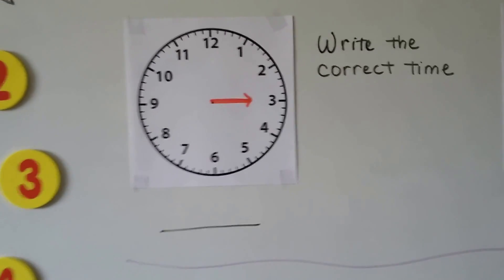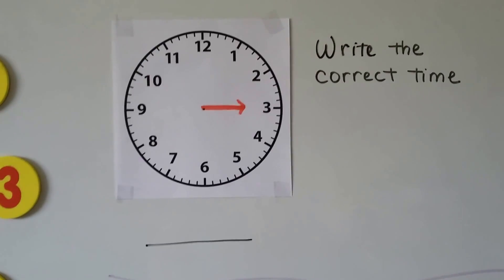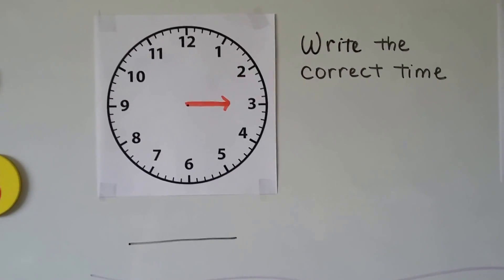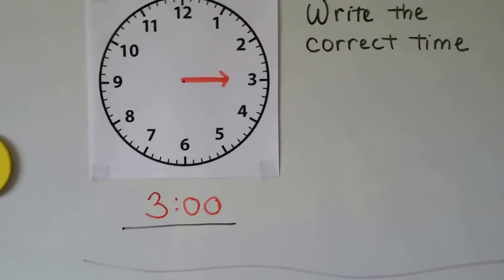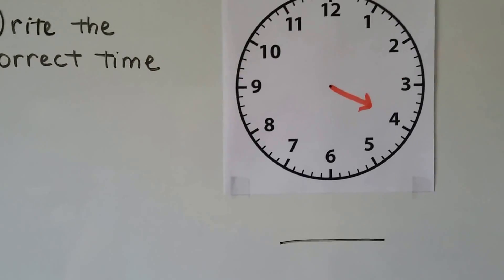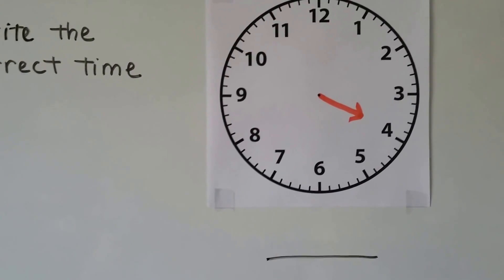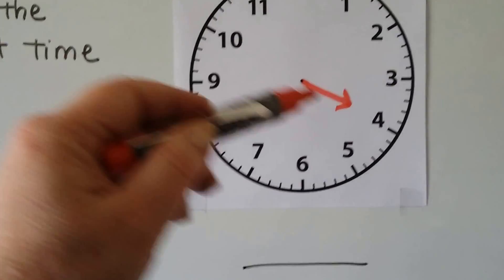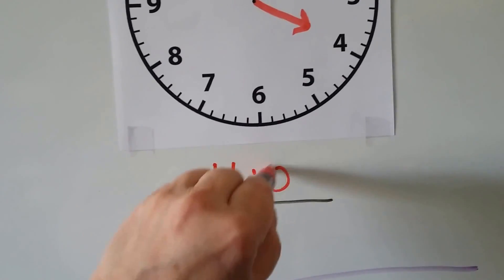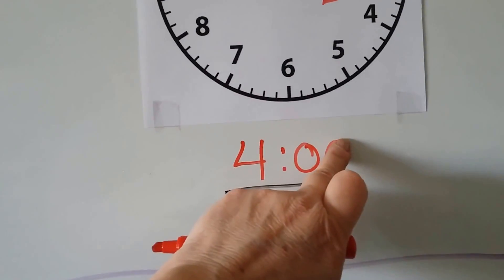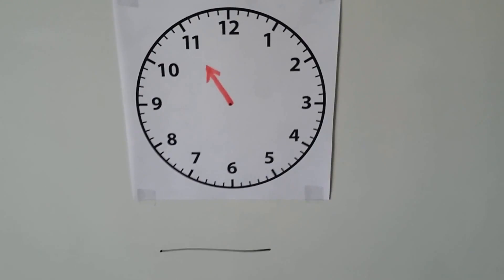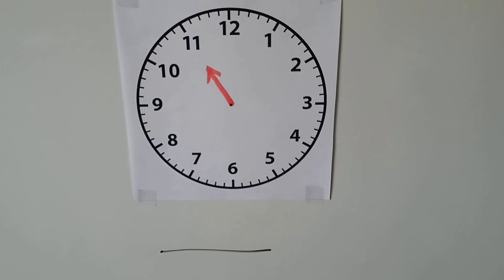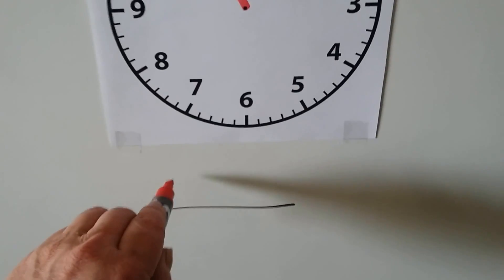Write the correct time. The hour hand is pointing to the three — it must be three o'clock. What time is this clock showing? The hour hand is pointing to the four — it must be four o'clock. What is this clock showing? The hour hand is pointing to the eleven — it's eleven o'clock.